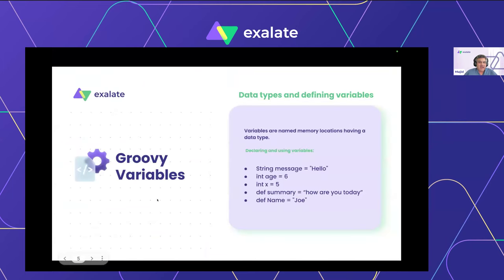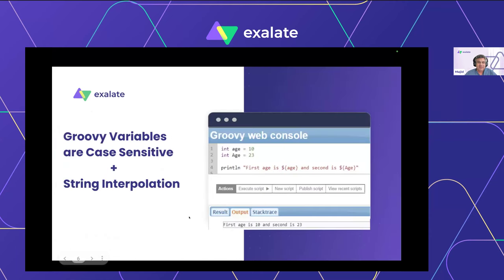Variables — like any other programming language — are placeholders where you keep your data and reference it later in your scripts. The good part about Groovy is there's a whole variety of syntax: you can use the classic notation specifying the data type and variable name, use the keyword 'def', or even use nothing at all. Groovy variables are case sensitive like Java. Let me show you string interpolation, which we use a lot in the Exalate world.